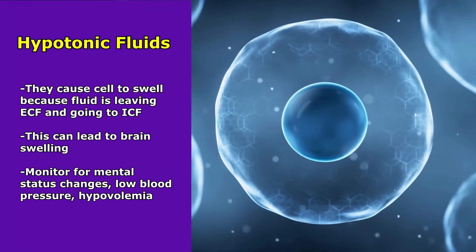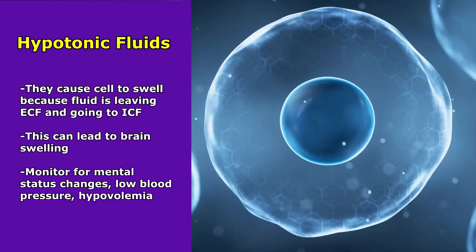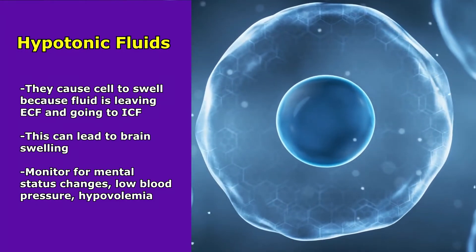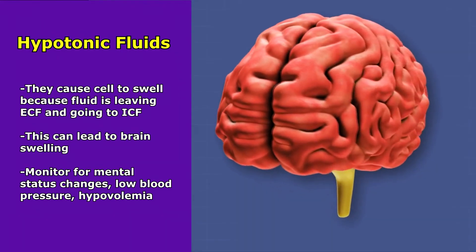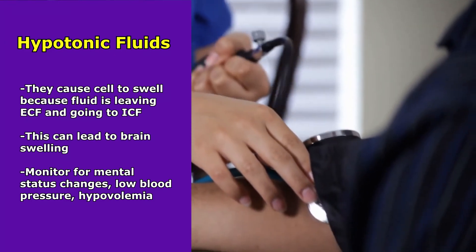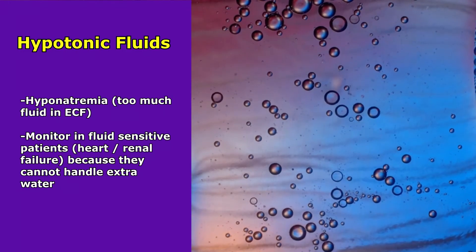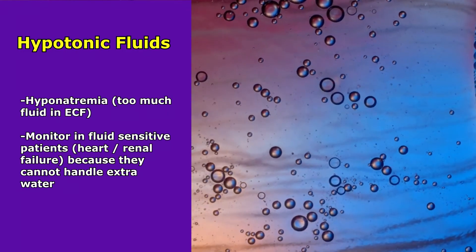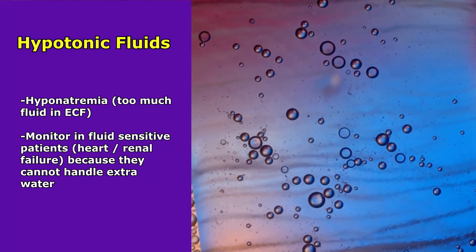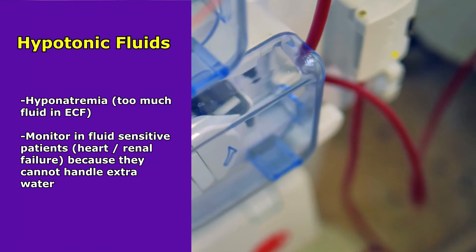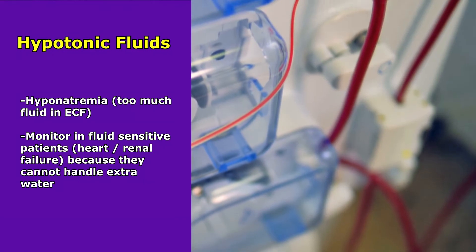As a nurse, remember that hypotonic solutions cause the cell to swell because fluid is leaving the extracellular fluid and going into the intracellular fluid, which could cause brain swelling. So you want to monitor for mental status changes, low blood pressure, and hypovolemia. Because we are giving free water to the extracellular space, we could give too much — so monitor for hyponatremia. Also monitor patients who are more fluid sensitive, especially those with heart failure and renal failure, because they cannot handle the extra water.